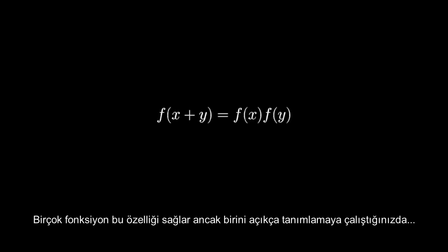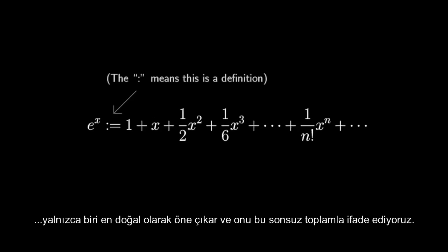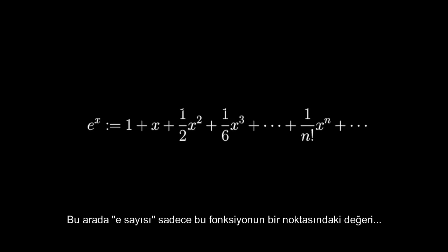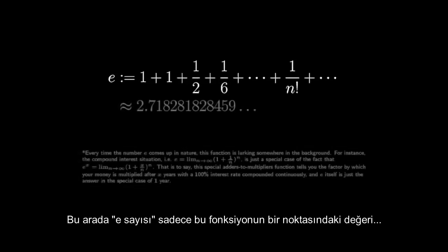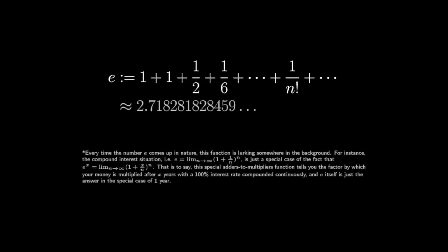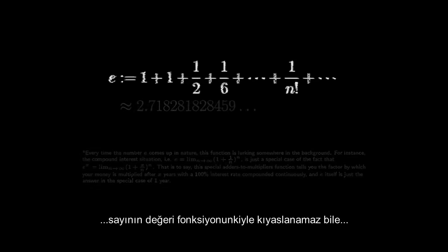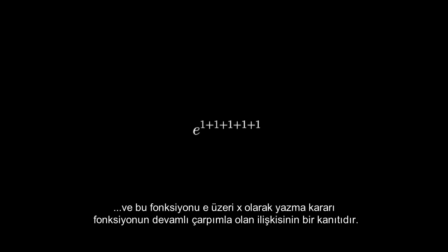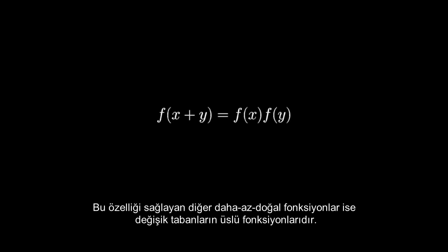Multiple functions satisfy this property, but when you try to define one explicitly, one stands out as being the most natural, and we express it with this infinite sum. By the way, the number e is just defined to be the value of this function at one. The number isn't nearly as special as the function as a whole, and the convention to write this function as e to the x is a vestige of its relationship with repeated multiplication. The other, less natural functions satisfying this property are the exponentials with different bases.